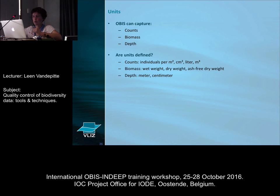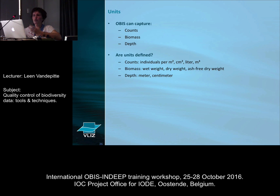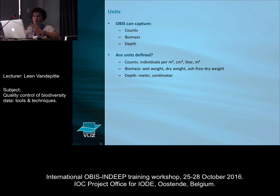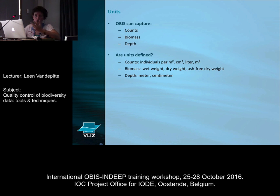Units is also something that's rather important. Because OBIS can capture counts, biomass, depth information and so on, the units need to be defined. It's a big difference if you found four crabs in one square meter or in 10 square kilometers. For biomass, is it wet weight, dry weight, or ash-free dry weight? We already had datasets that had depth documented in centimeters. So if you see really big numbers for depth, it's worthwhile checking whether they used meters or centimeters. Some datasets will be in fathoms, which means you need to recalculate to meters.